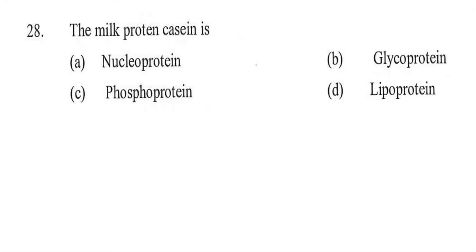Question twenty-eight: The milk protein casein is — option A a nucleoprotein, option B a glycoprotein, option C a phosphoprotein, or option D a lipoprotein. The right answer is C, casein is a phosphoprotein.